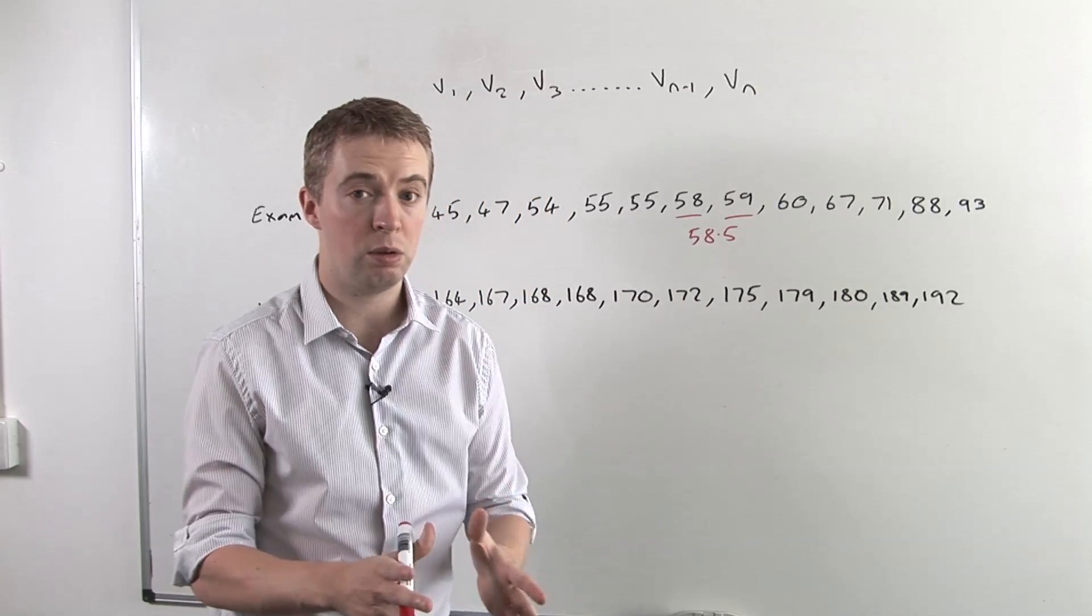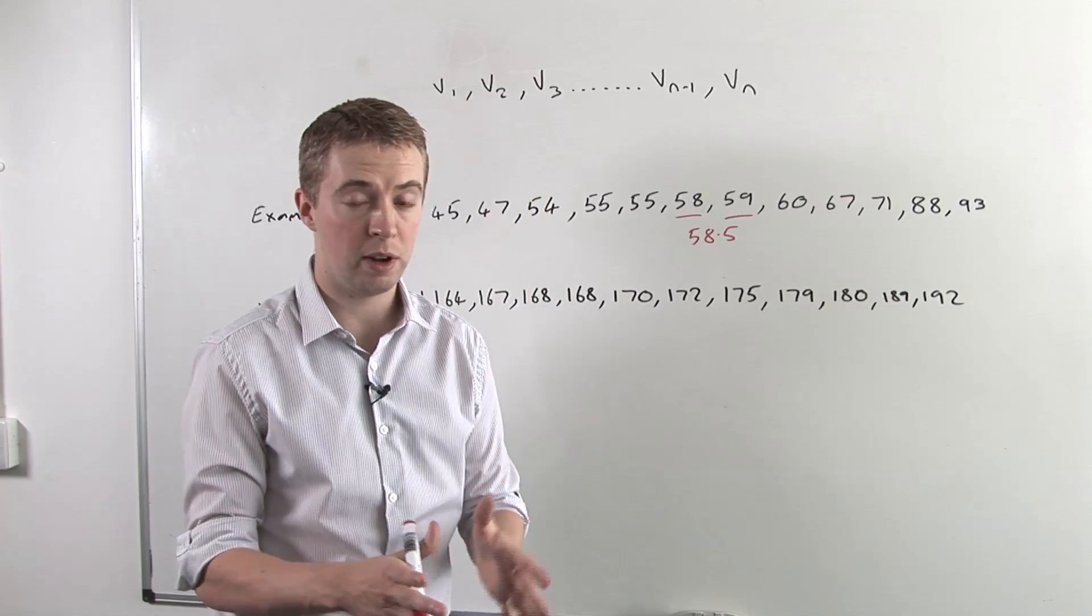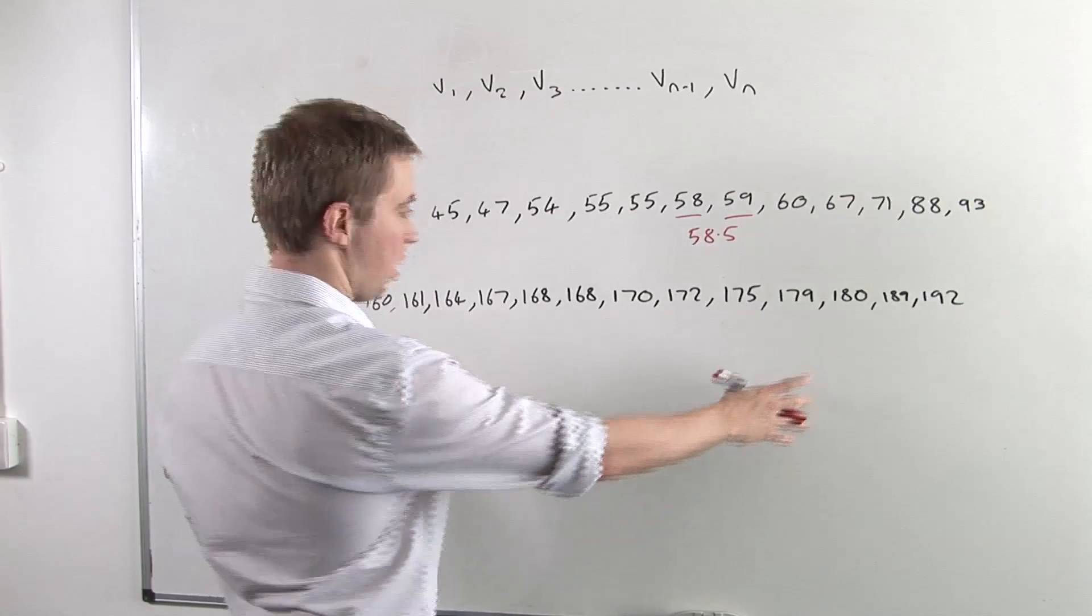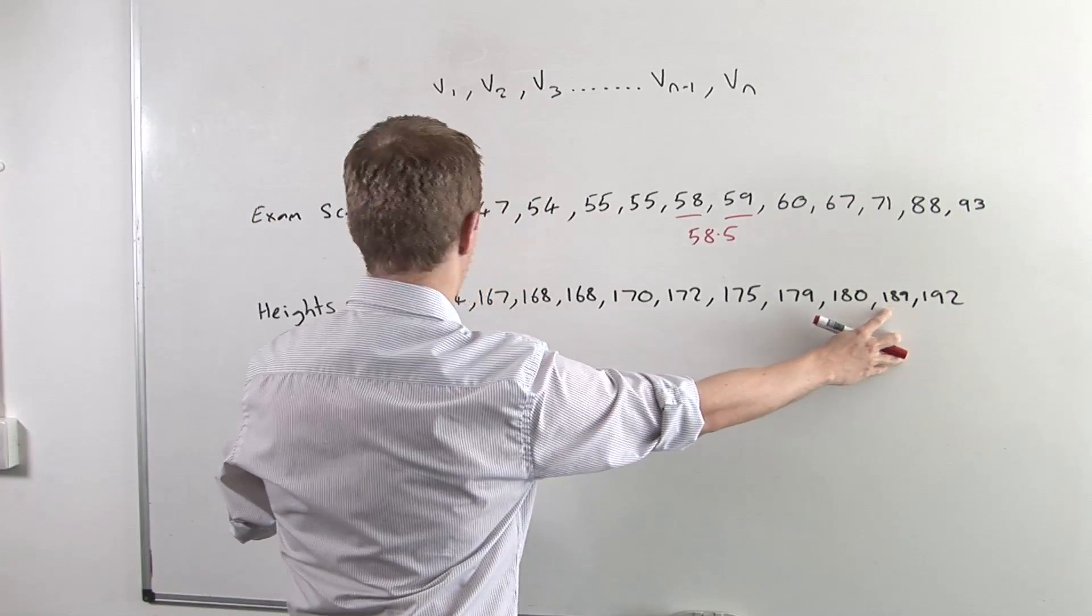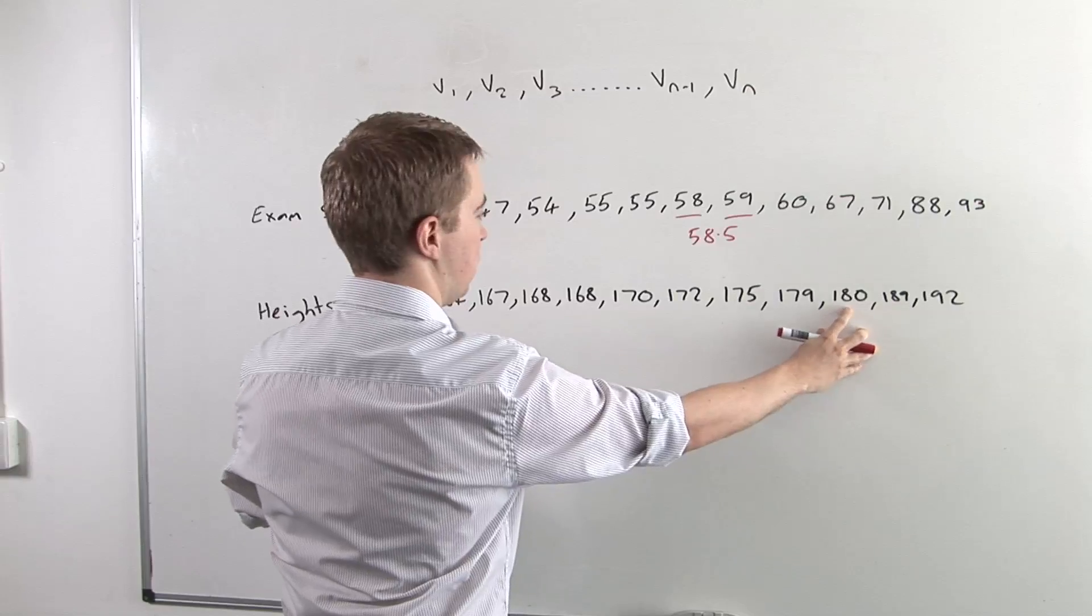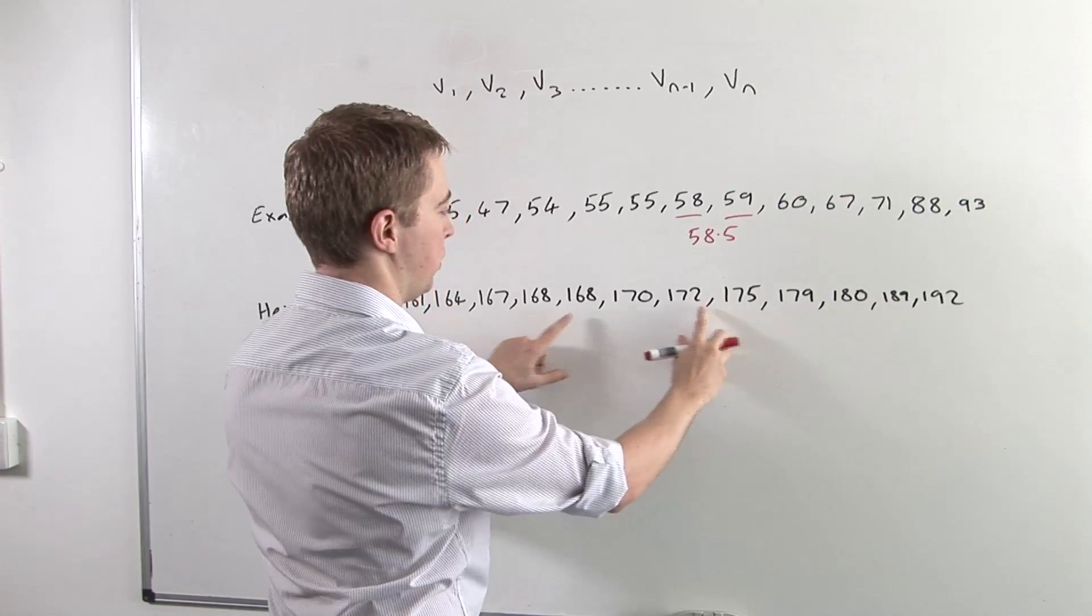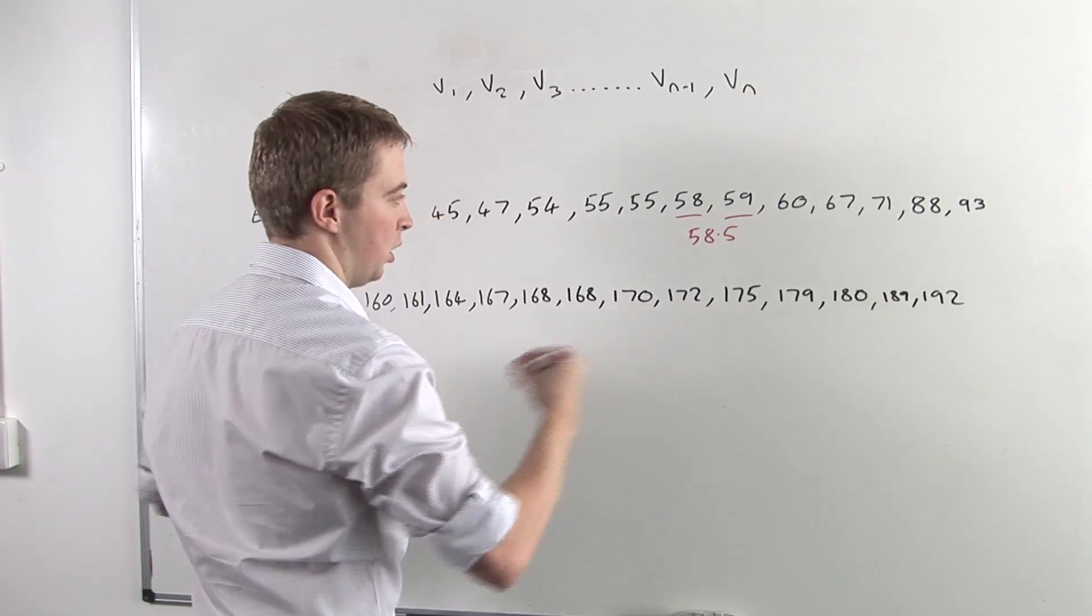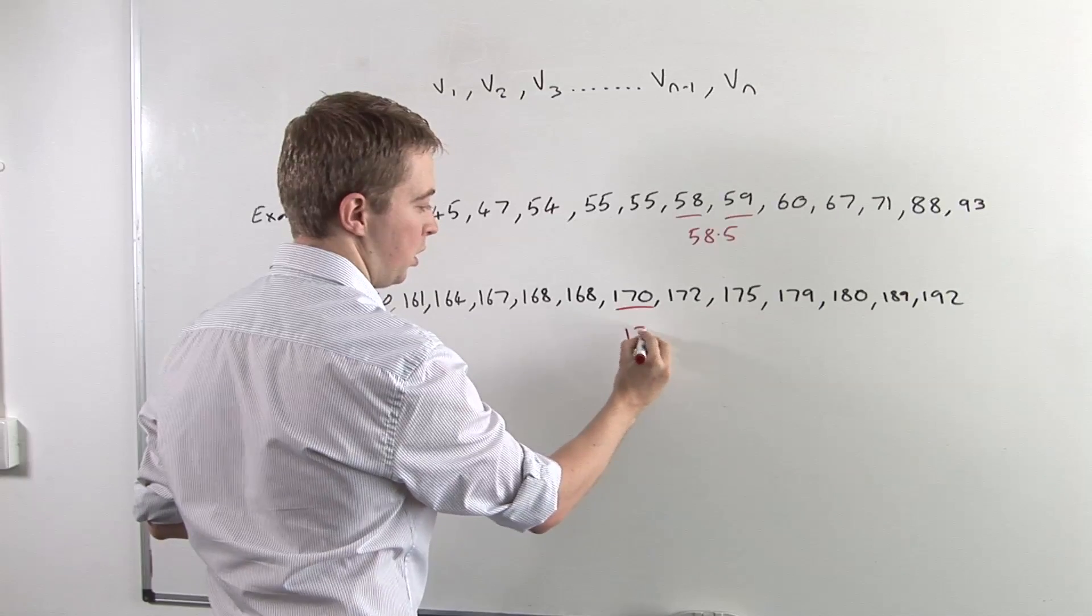The middle value of those 13 heights will be value number 7. And just to show that, we have 1, 2, 3, 4, 5, 6, and 7. So this is our median. Our median is 170.